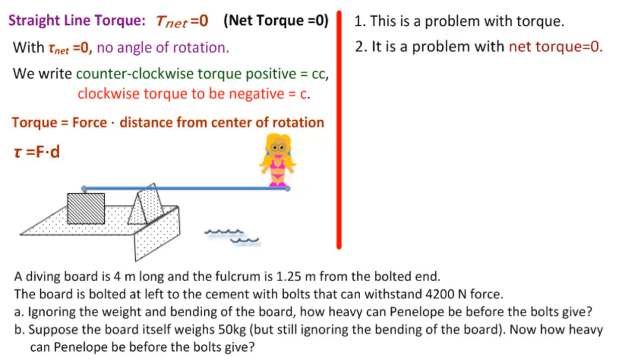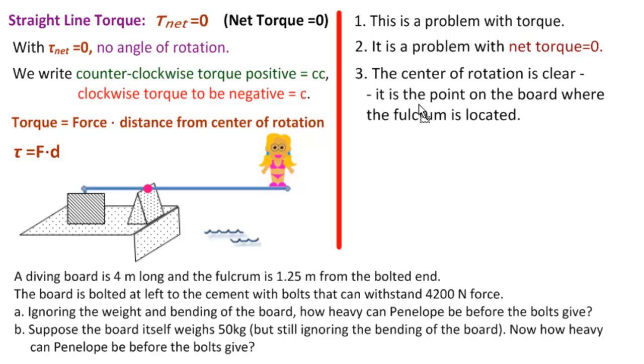The third nice thing about this problem is the center of rotation is clear. Many times it won't be. You'll have to try and figure out where the center of rotation. Hinges, fulcrums, but sometimes you don't get that either. So in this case we have a fulcrum, so that's the center of rotation right there, like a seesaw. It is the point on the board where the fulcrum is located. So now we know the center of rotation.